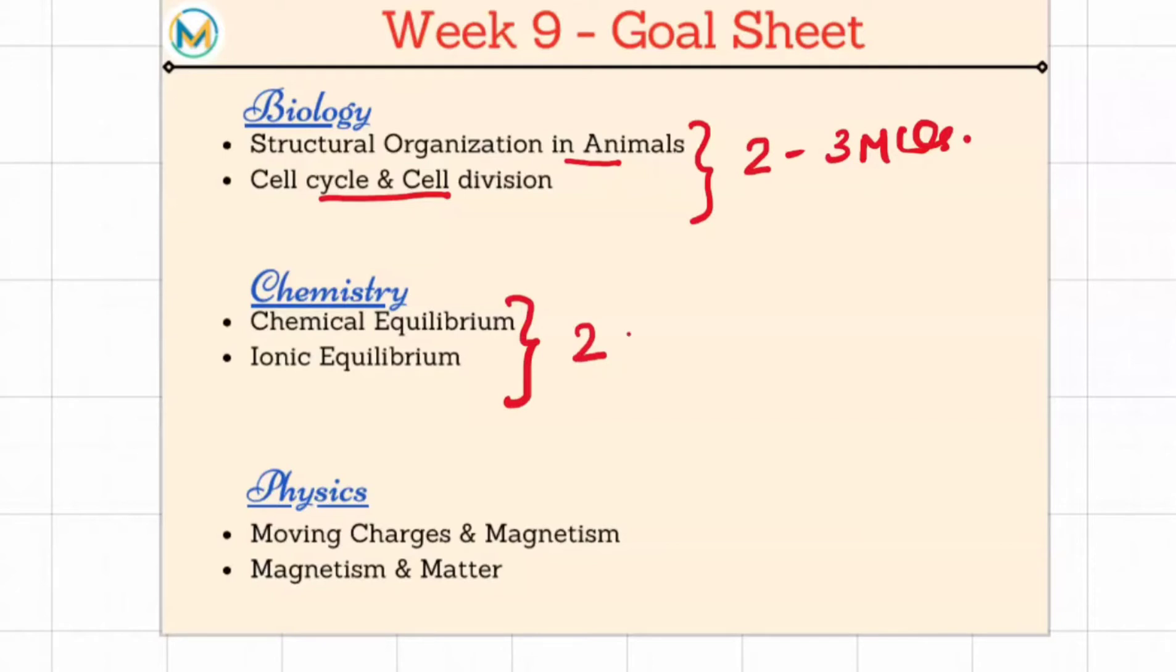In physics we'll be doing the topic magnetism. The first one is moving charges and magnetism, the second one is magnetism and matter. Both you can consider around two to three questions each.